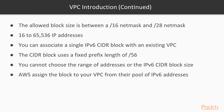You can associate a single IPv6 CIDR block with an existing VPC, or when creating a new one. The CIDR block uses a fixed prefix length of /56, and AWS assigns the block from their pool of IPv6 addresses. Note that you must also specify an IPv4 CIDR block, otherwise your VPC will not be able to function. Once you have specified the size of your VPC, you cannot modify it — to extend it, you would need to create a new VPC and move all your resources to it.